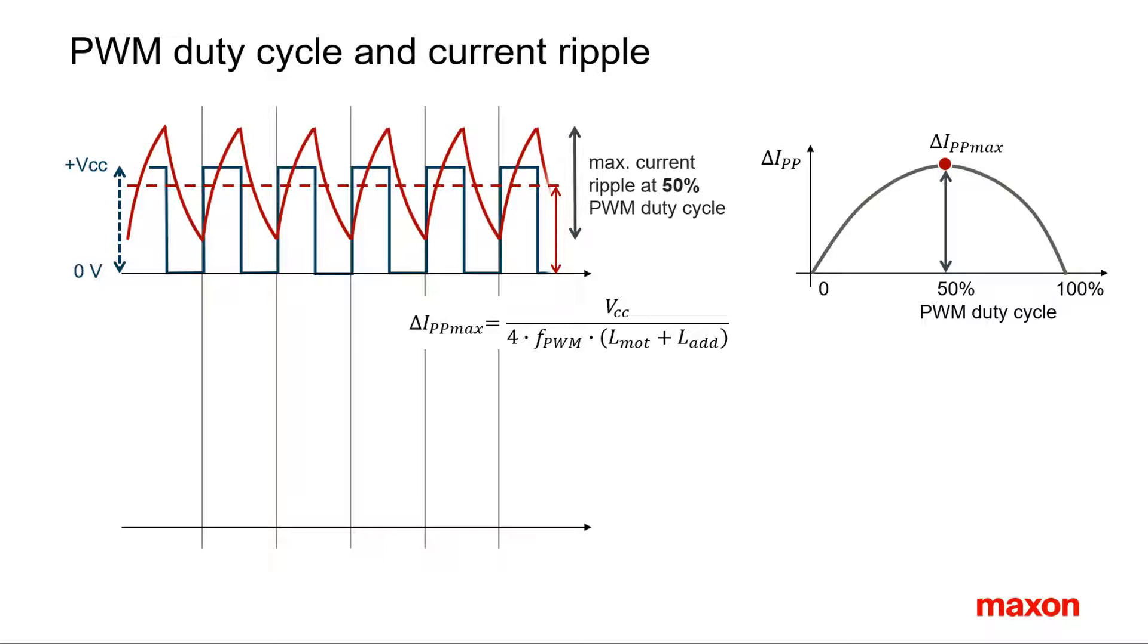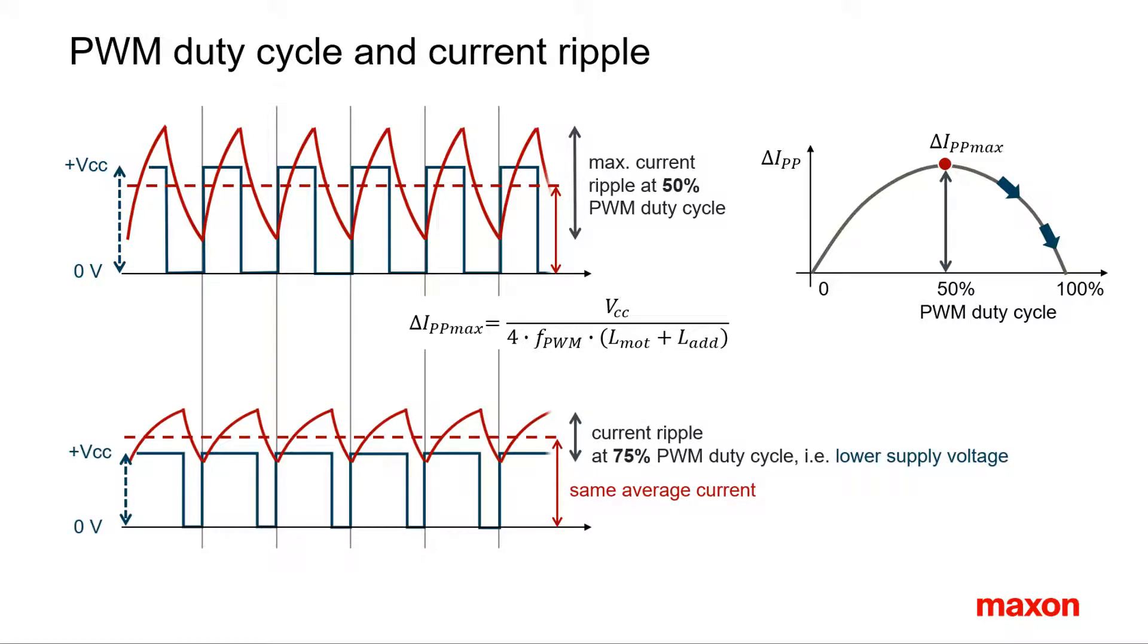This formula is valid for the worst case, when the required voltage is just half the supply voltage, corresponding to 50% PWM duty cycle. A closer analysis of the current ripple reveals that enhancing the PWM duty cycle by reducing the supply voltage minimizes the current ripple even further. This is qualitatively shown in the lower diagram. Hence, reducing the supply voltage has a double positive effect. It minimizes the current ripple and enhances the PWM duty cycle.